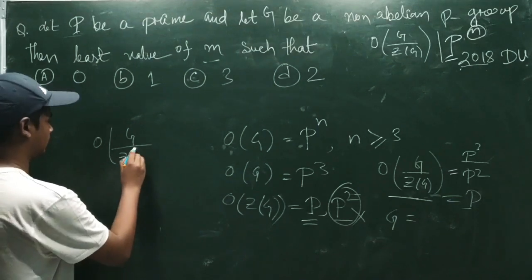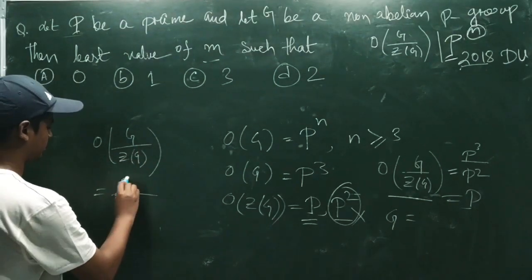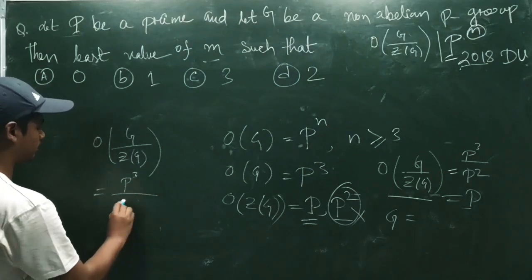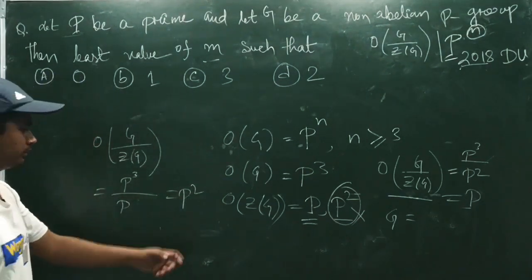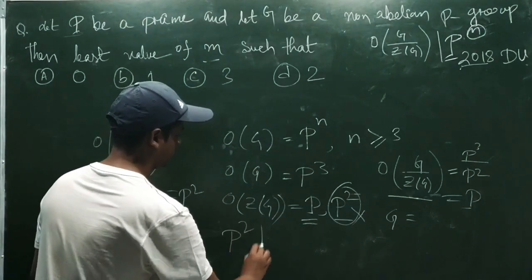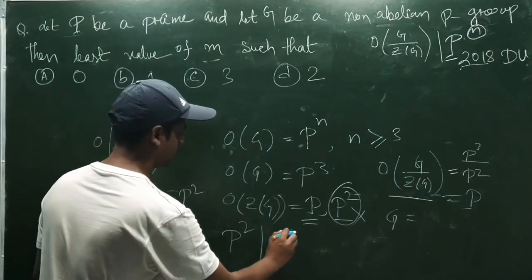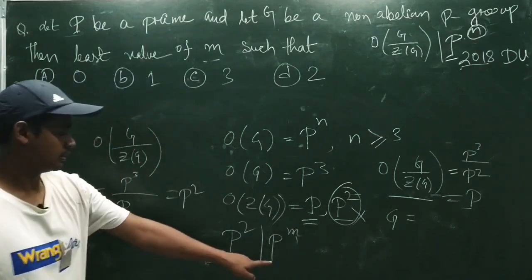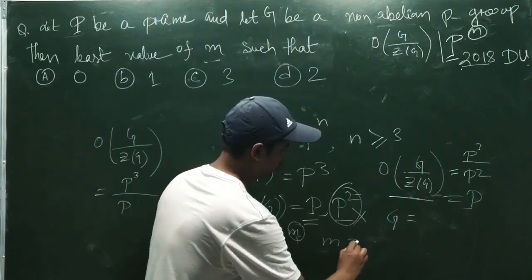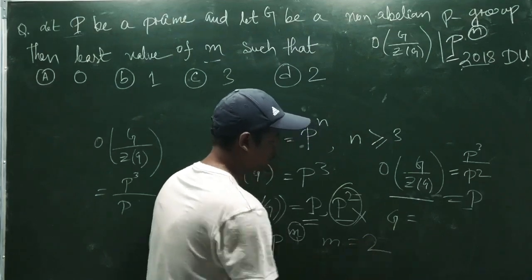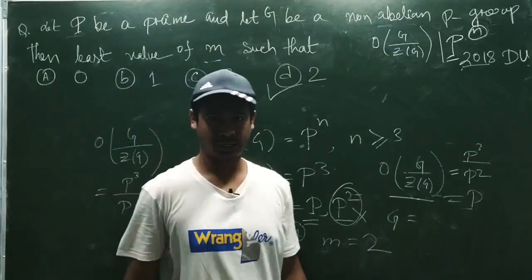If the order of the center is P, then the order of Z by Z(Z) becomes P cubed divided by P, which equals P squared. So if P squared divides P to the power M, then the least value of M will be 2. So 2 is the correct answer.